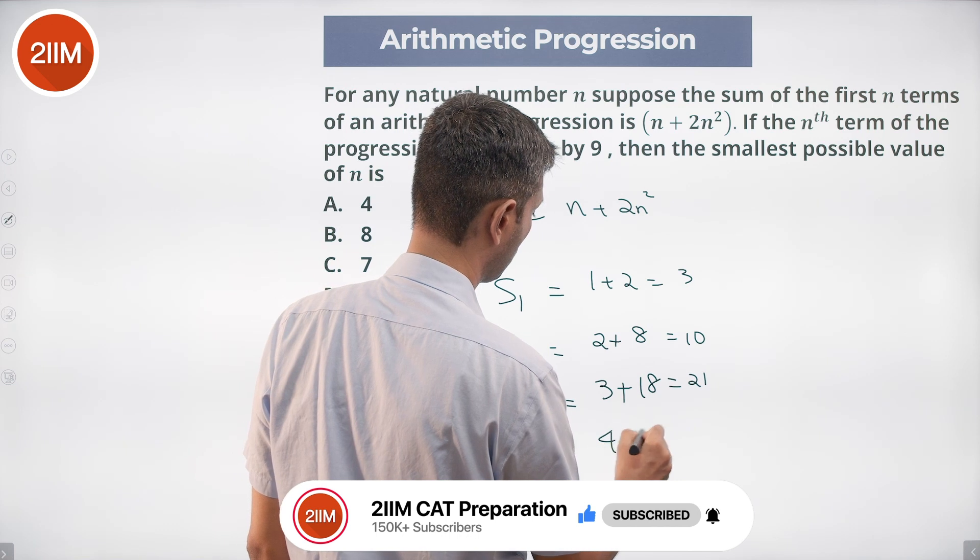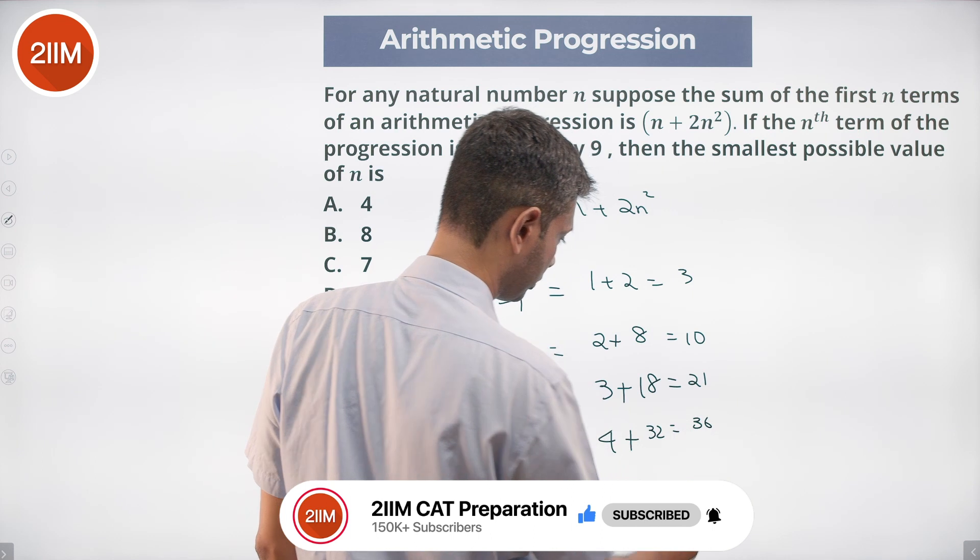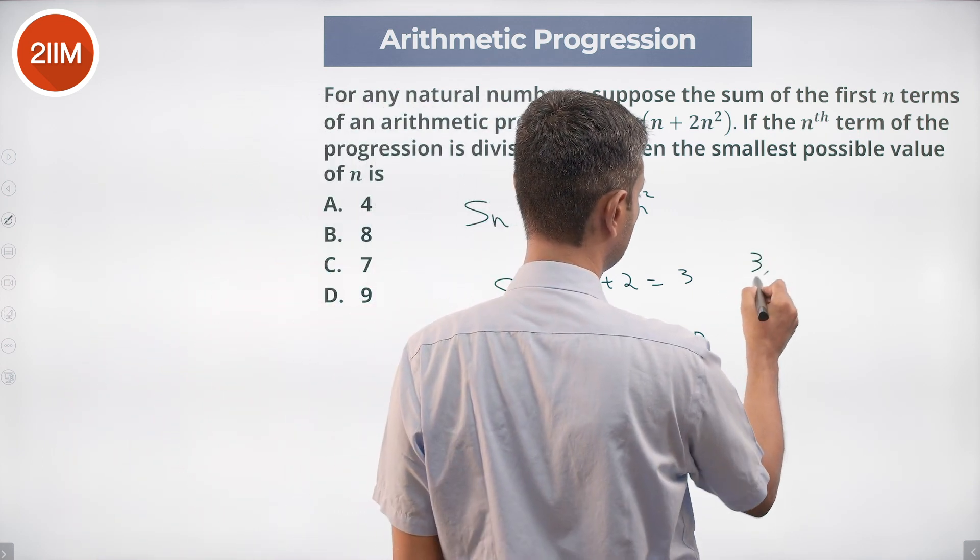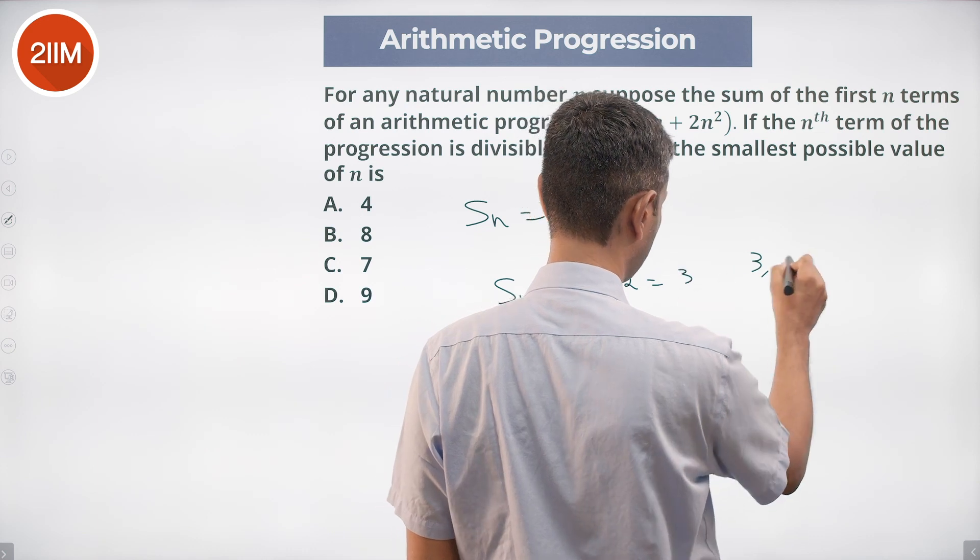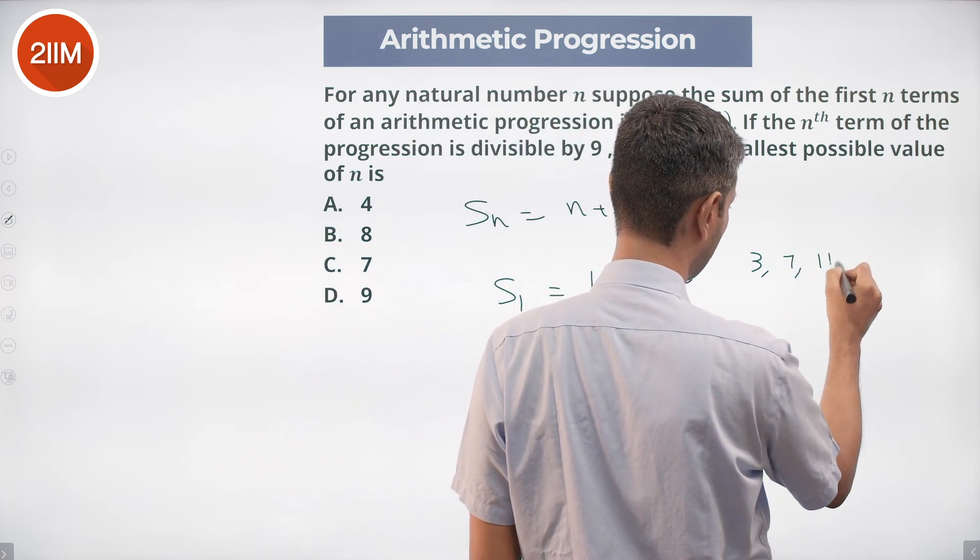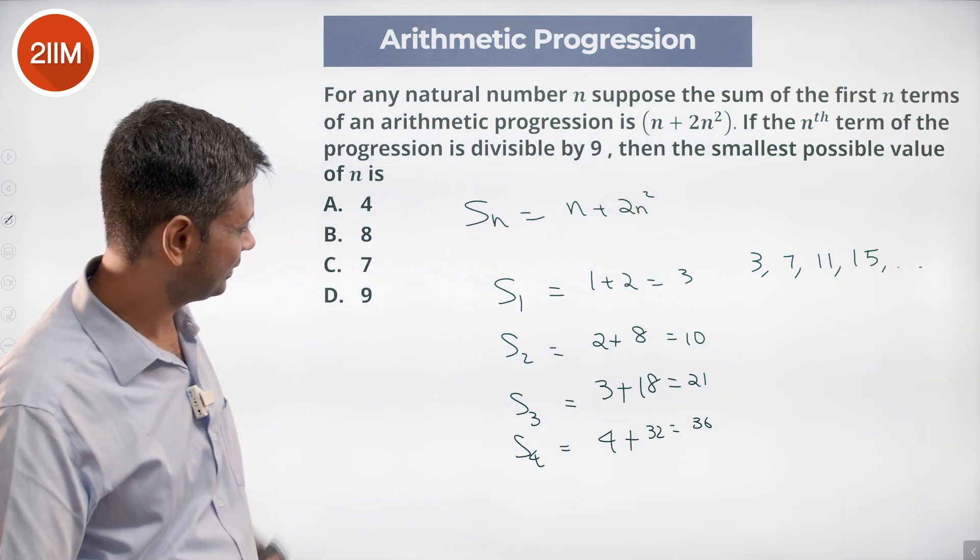Sum up to 4 terms: S_4 = 4 + 2(16) = 4 + 32 = 36. So the first term is 3, second term is 10 - 3 = 7, third term is 21 - 10 = 11, fourth term is 15, and so on.